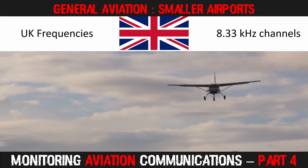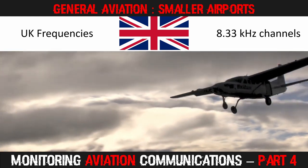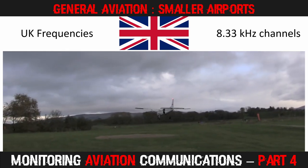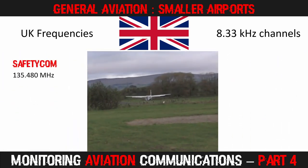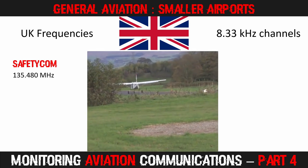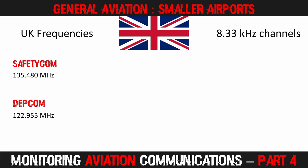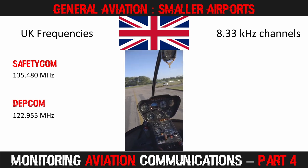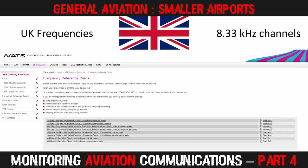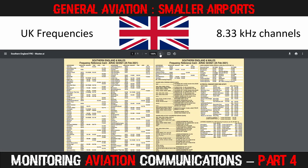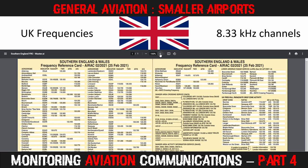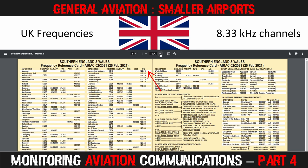In the UK, the system is a bit different, and most frequencies are now based on the 8.33 kHz spacing prevalent across Europe. Fixed wing aircraft at aerodromes without an assigned frequency use a channel called SafetyCom on 135.48 MHz. Helicopters use Depcom on 122.955, so it's good to have these in your scan list. However, most airports have assigned frequencies. The quickest way of finding them is to view your regional frequency card found on the NATS site. On the Southern England and Wales reference card, you can see a summarised view of frequencies for each airport. Those that have a frequency only in the AG column will be primarily general aviation airfields, although you will hear GA traffic at many of the tiered airports as well.